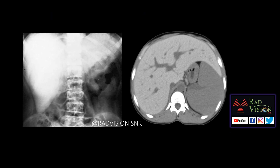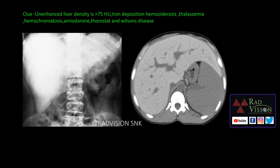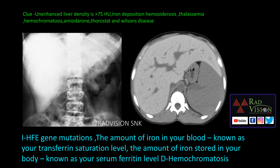When unenhanced liver density is greater than 75 HU, it is classical for a hyperdense liver. This can occur in iron deposition from hemosiderosis, thalassemia, hemochromatosis, amiodarone, thorotrast exposure, and Wilson's disease. The clues here are hyperdense liver, hepatomegaly, hyperpigmentation of brown skin, and arthralgia. The investigations to advise are HFE gene mutations, transferrin saturation levels, and serum ferritin levels. The diagnosis is hemochromatosis, where there is increased iron deposition with significant organ damage — unlike hemosiderosis where organ damage is very late.